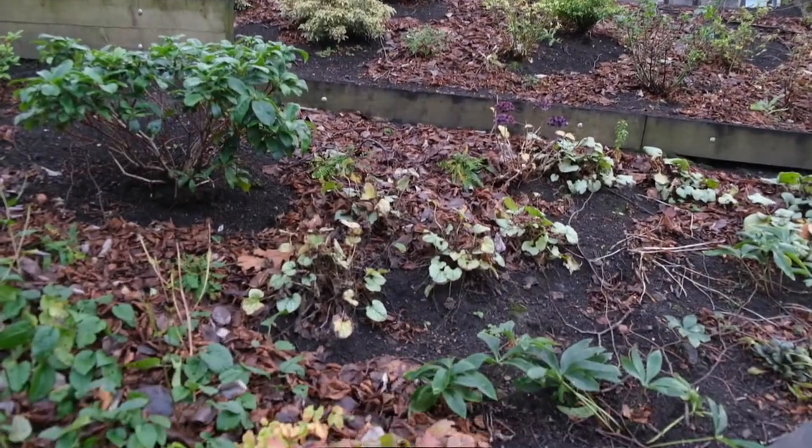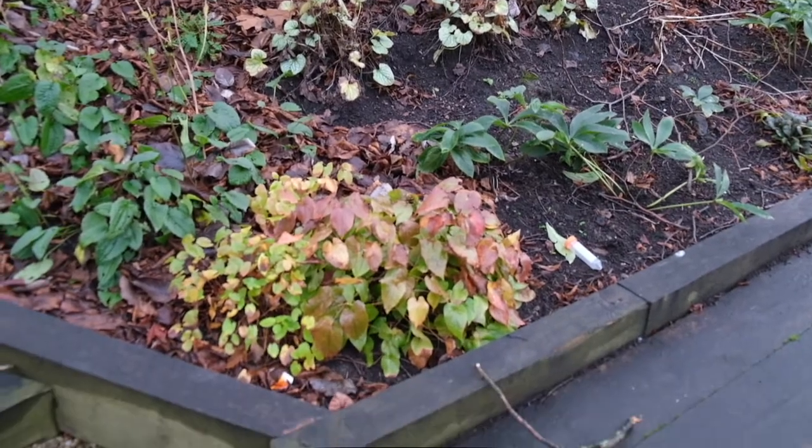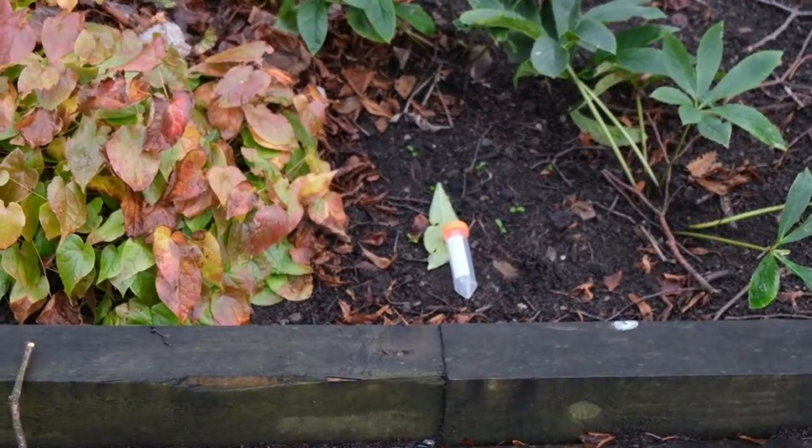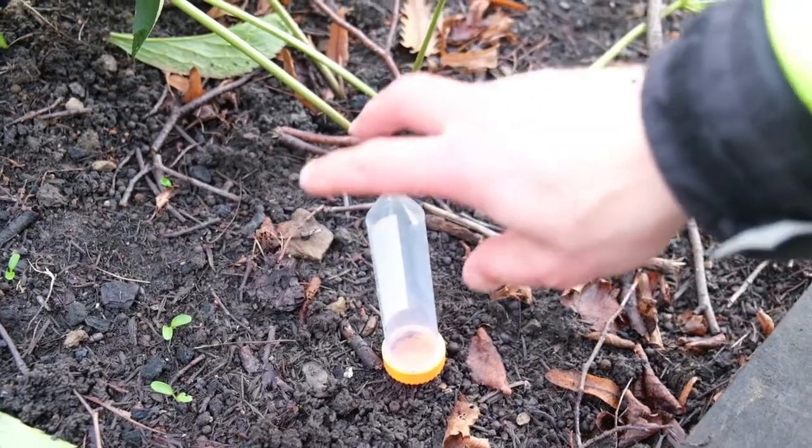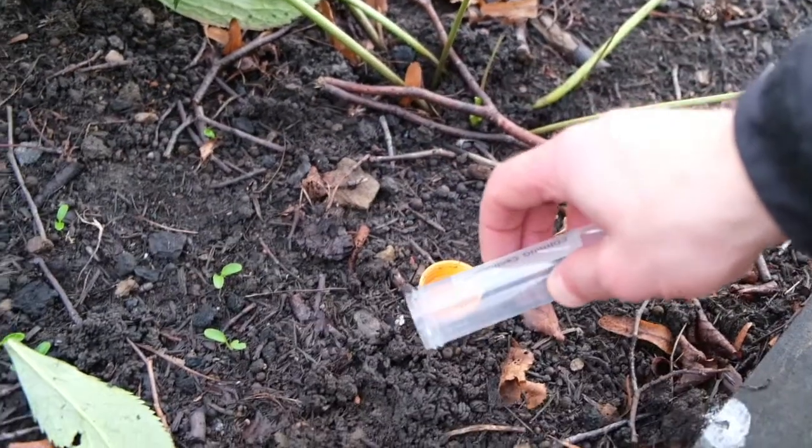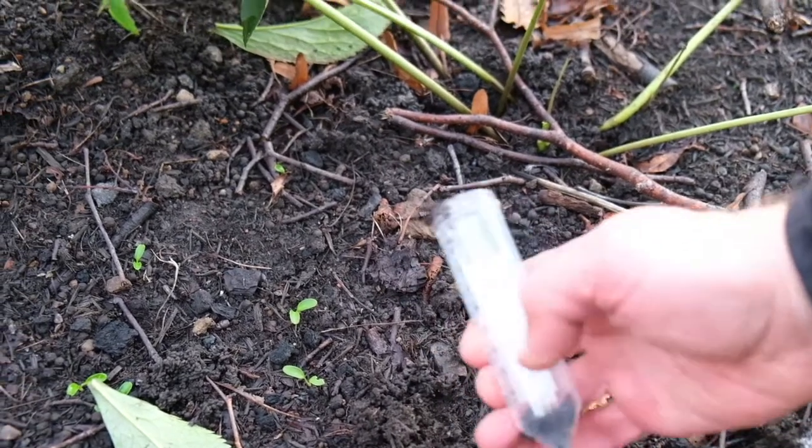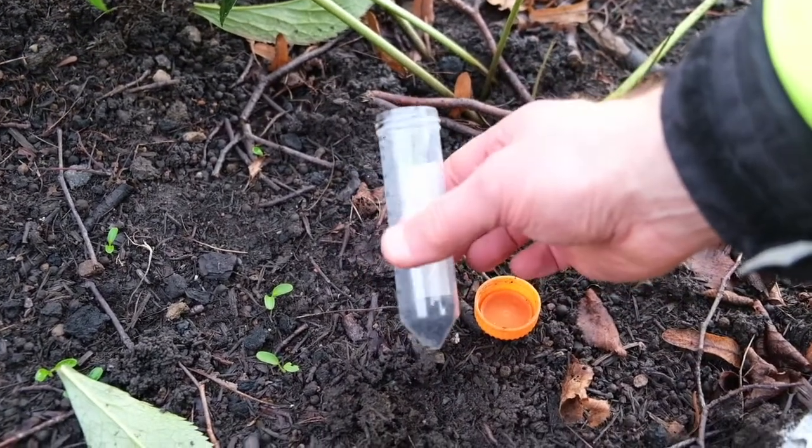We are taking our first sample from this garden just outside the Davidson Building in the University of Glasgow. We will take our sample using a 50mm plastic corning tube. Without touching the soil or the inside of the tube, scoop up a small sample of soil and put the lid back on the tube.